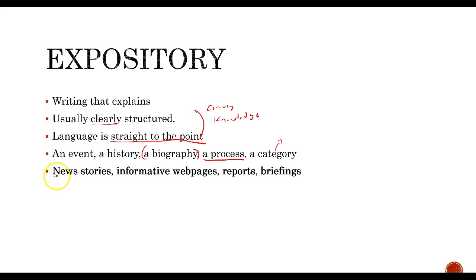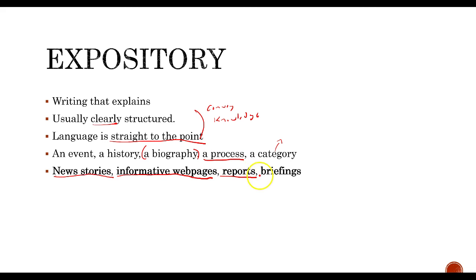Or a process — maybe a piece of expository writing that explains how to do something, like how to fabricate a chair. We could also have expository writing that explains categories of things, like types of stars or types of classes you might take. Examples of expository writing include news stories, informative web pages, reports from a committee, or a briefing of a court case — basically anything that explains something to us.